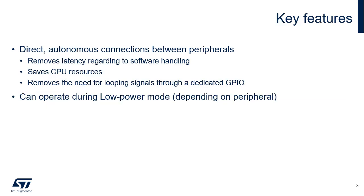The Interconnect Matrix offers two main features. First, it ensures direct and autonomous connections between peripherals, allowing the removal of latencies regarding software handling, thus saving GPIO and CPU resources. Second, the interconnection between certain peripherals can even operate during low power modes.